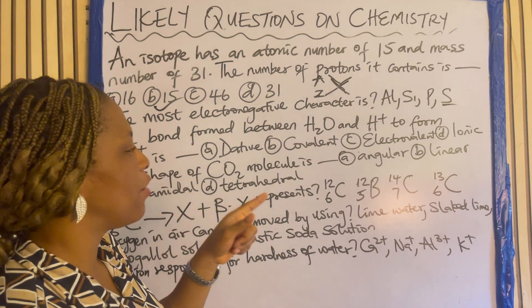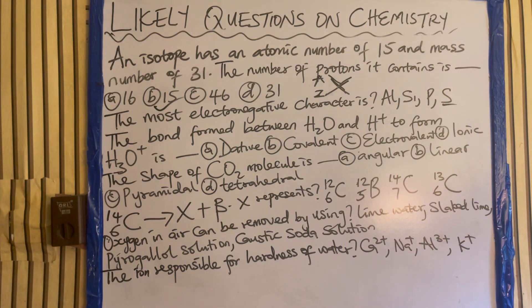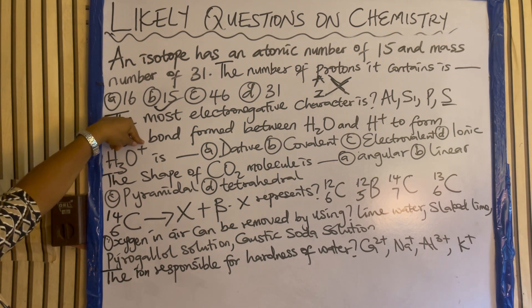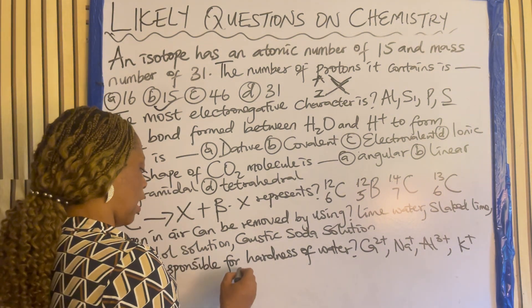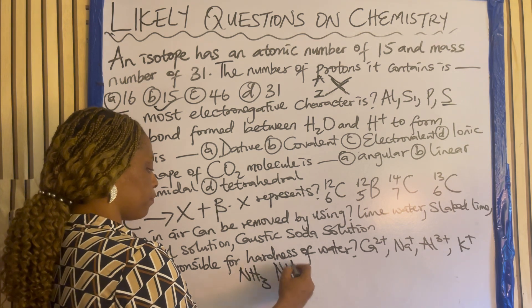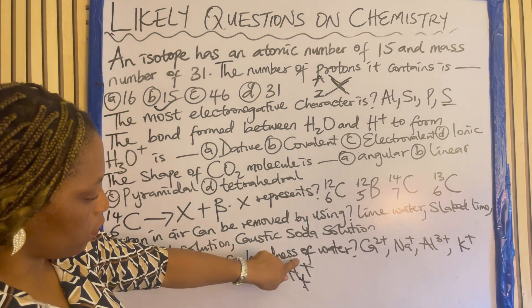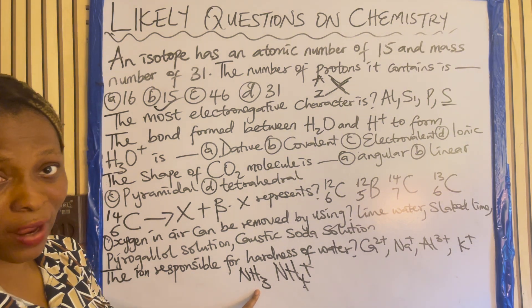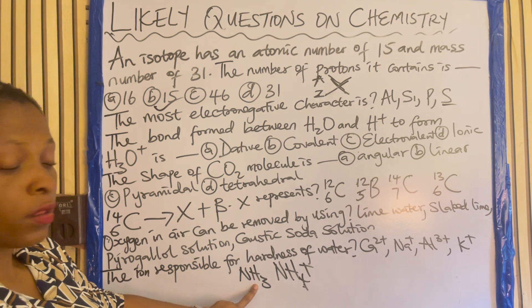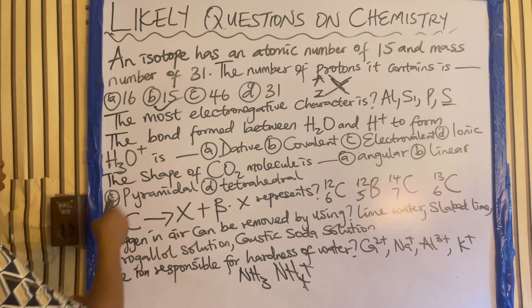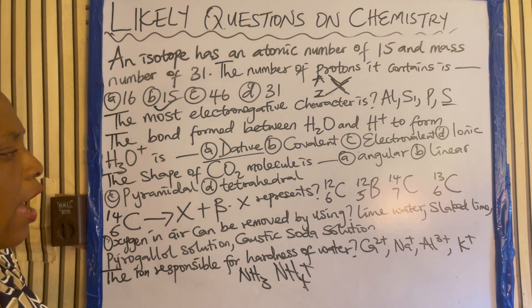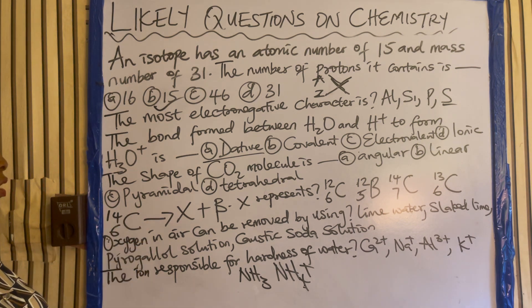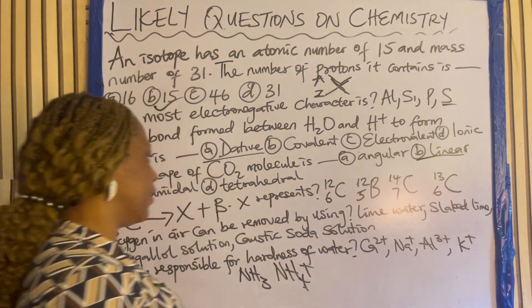The bond formed between water and a hydrogen ion to form hydronium ion is — dative, covalent, electrovalent, or ionic? Once you see a plus sign, note that it is dative or coordinate. For example, the difference between ammonia and ammonium: ammonium is dative because of the plus, while ammonia is ordinary covalent. Since there is a plus here, the answer is dative. The shape of carbon dioxide (CO₂) molecule is angular, linear, pyramidal, or tetrahedral? CO₂ molecule is linear.